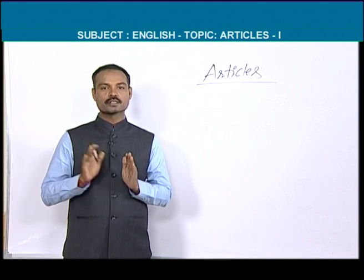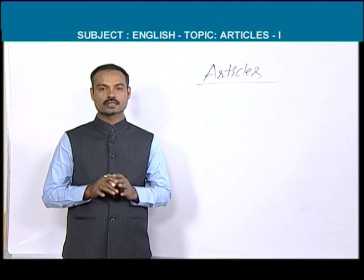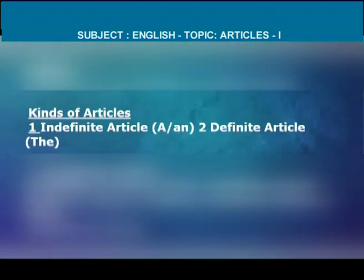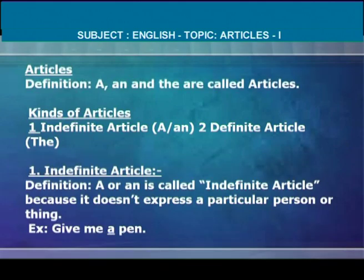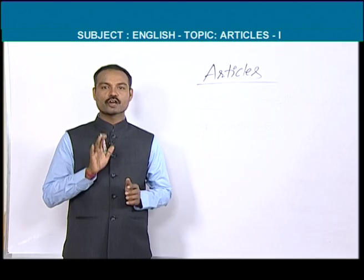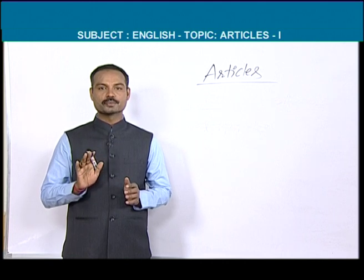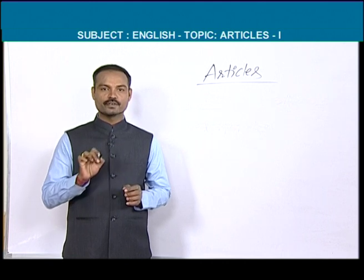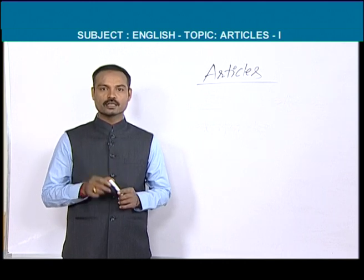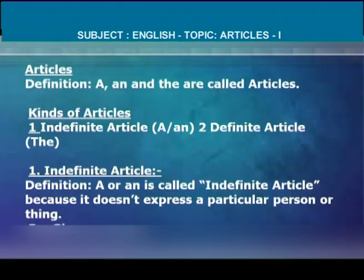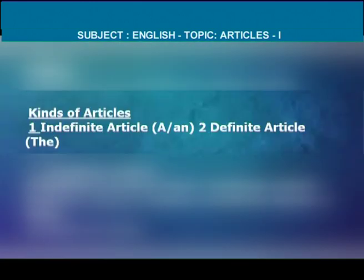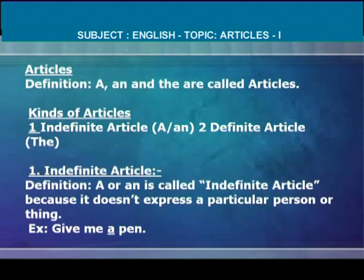Now, kinds of articles or types of articles. In English, there are two types of articles: indefinite article and definite article. Articles have been divided into two types — indefinite and definite. A and AN are called indefinite articles. THE is called definite article.